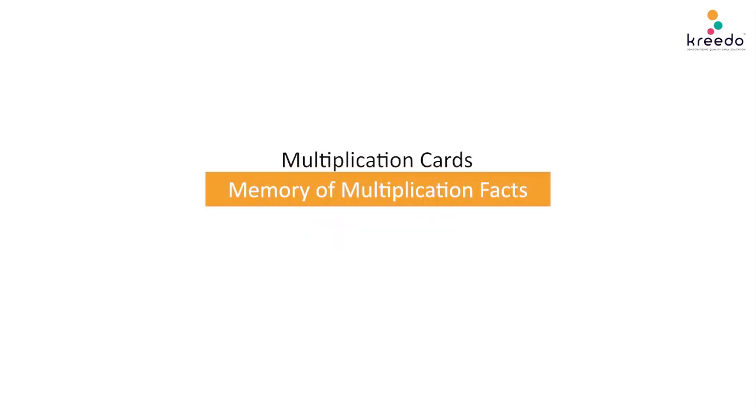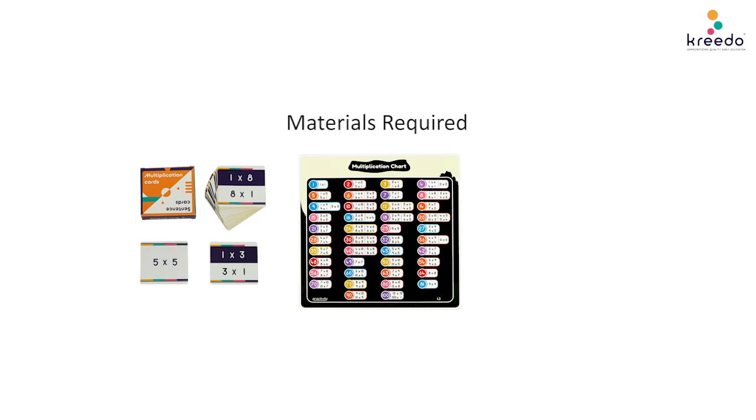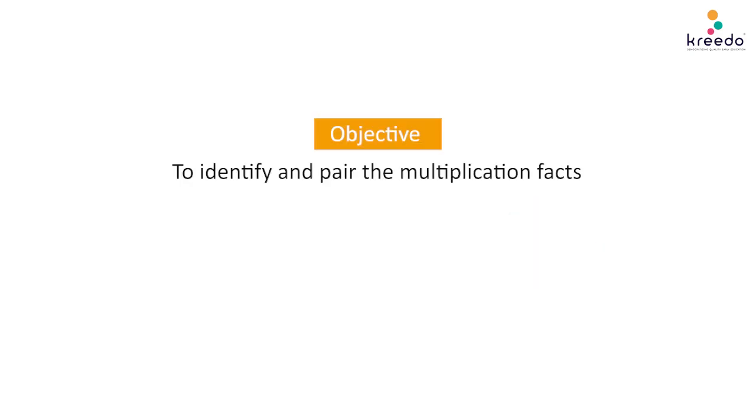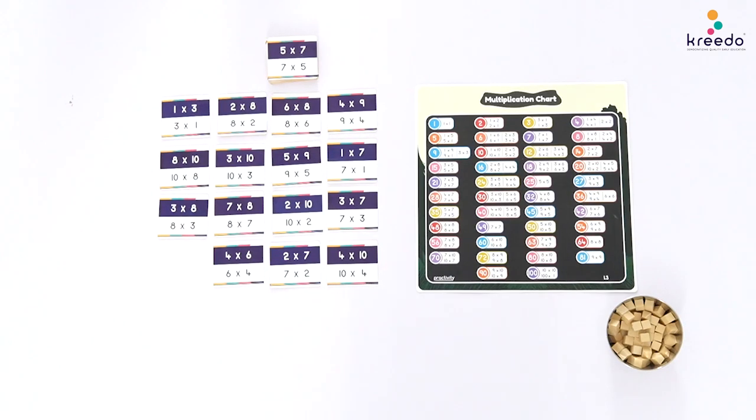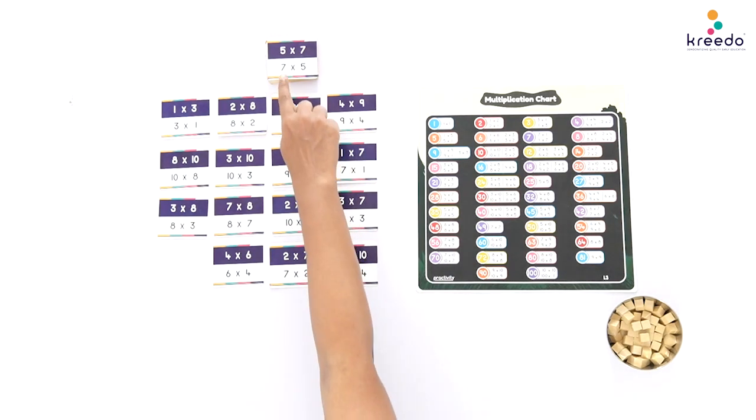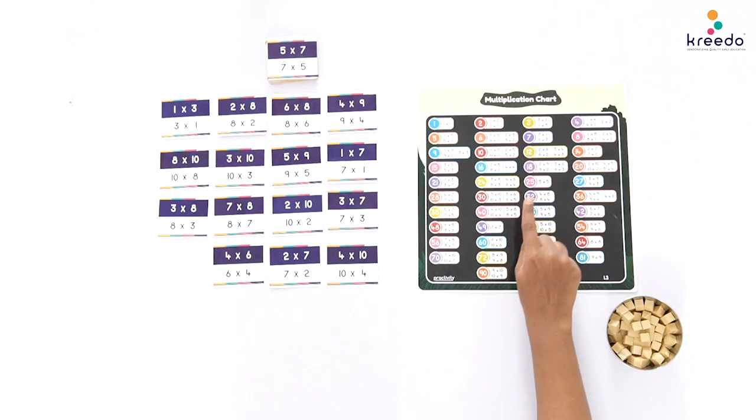Multiplication Cards: Memory of Multiplication Facts. Materials required: multiplication cards, multiplication fact chart, unit cubes. Objective: to identify and pair the multiplication facts. Procedure: Place the multiplication cards in a stack, multiplication fact chart, and unit cubes in the place of presentation.